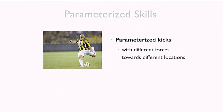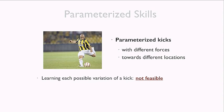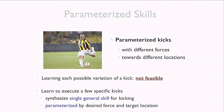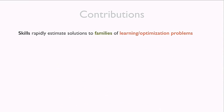So how do we learn parameterized kicks, where parameters describe the properties we want? The naive approach — learning every possible kick from scratch — takes forever given an infinite number of possibilities. Instead, we want to learn just a few examples with different parameters — different forces and target locations — and from these examples construct a single general skill for kicking, parameterized by desired force and target location, that produces on demand a good estimate of how to execute any kick without requiring additional training.